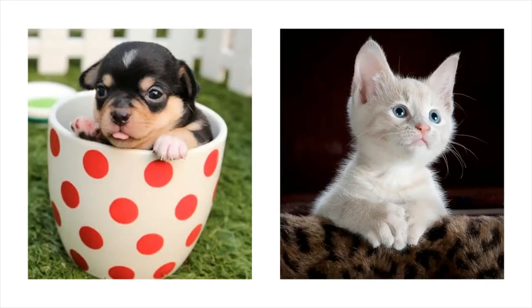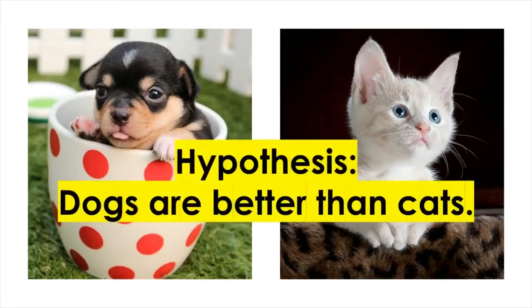Let's consider a sample hypothesis to illustrate what makes a hypothesis testable or falsifiable. Say you have the conviction that dogs are better than cats. Personally I love cats more and can probably give you 100 reasons why, but all these reasons can be subjective and not measurable. Let's try to be scientific and think about whether that statement qualifies as a scientific hypothesis based on testability and falsifiability.